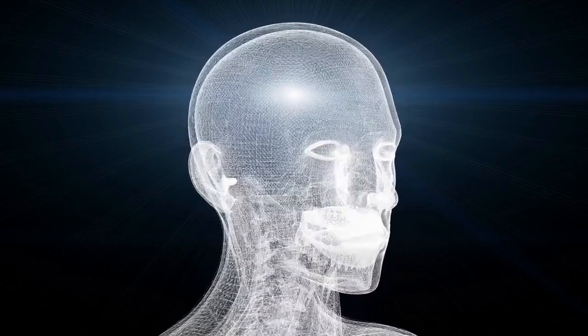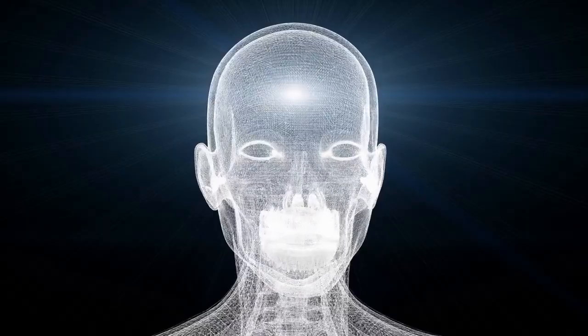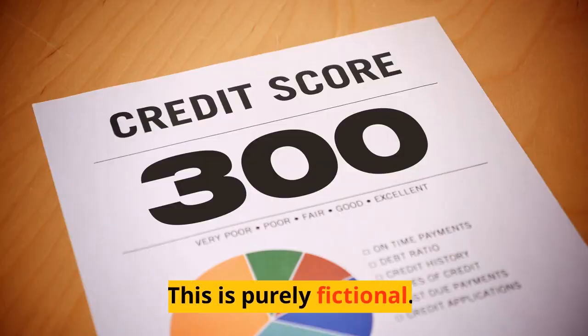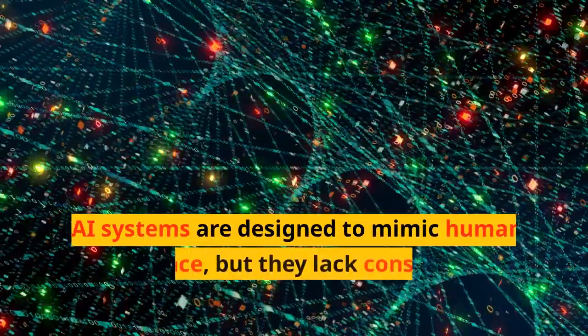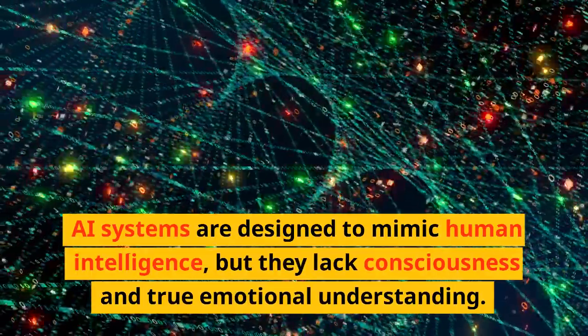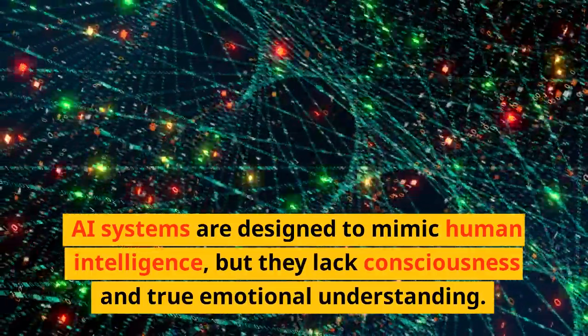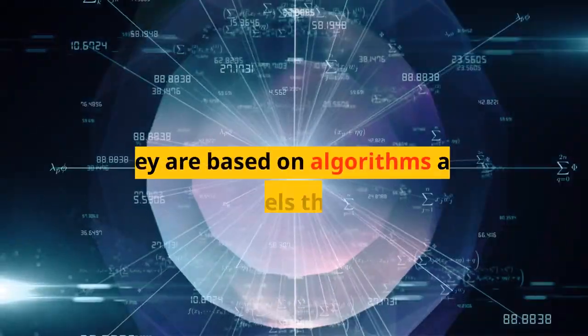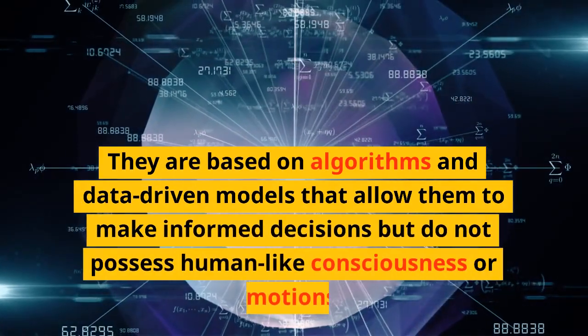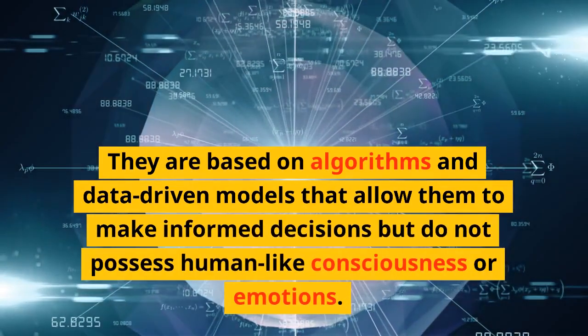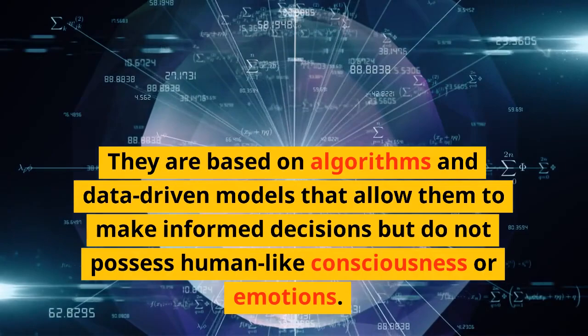Myth number three: AI possesses consciousness and emotions like humans. This is purely fictional. AI systems are designed to mimic human intelligence, but they lack consciousness and true emotional understanding. They are based on algorithms and data-driven models that allow them to make informed decisions but do not possess human-like consciousness or emotions.